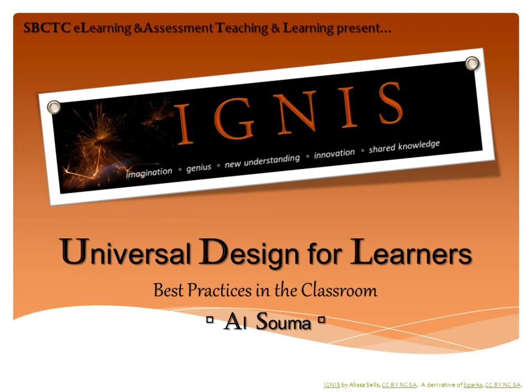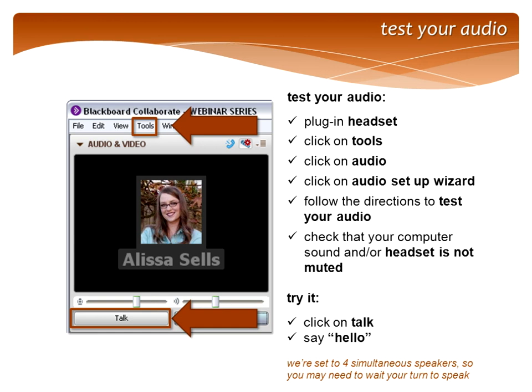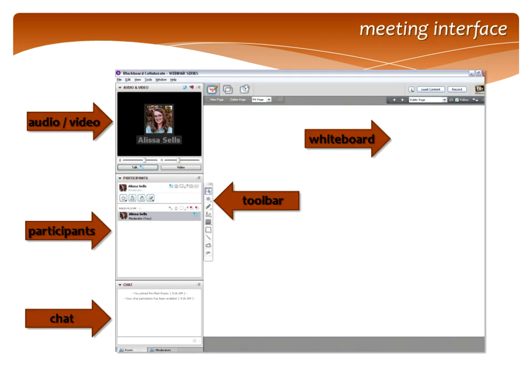We're going to get started by running through a few of the Collaborate tools and doing some group activities to get you familiar. Then we'll move on into Al's presentation. We are set to four simultaneous speakers today, so you might need to wait your turn to speak. Al and I both have our microphones turned on. This is the meeting interface — you can see the whiteboard area where our slides are displayed, and there's a toolbar between the whiteboard and the other panels.